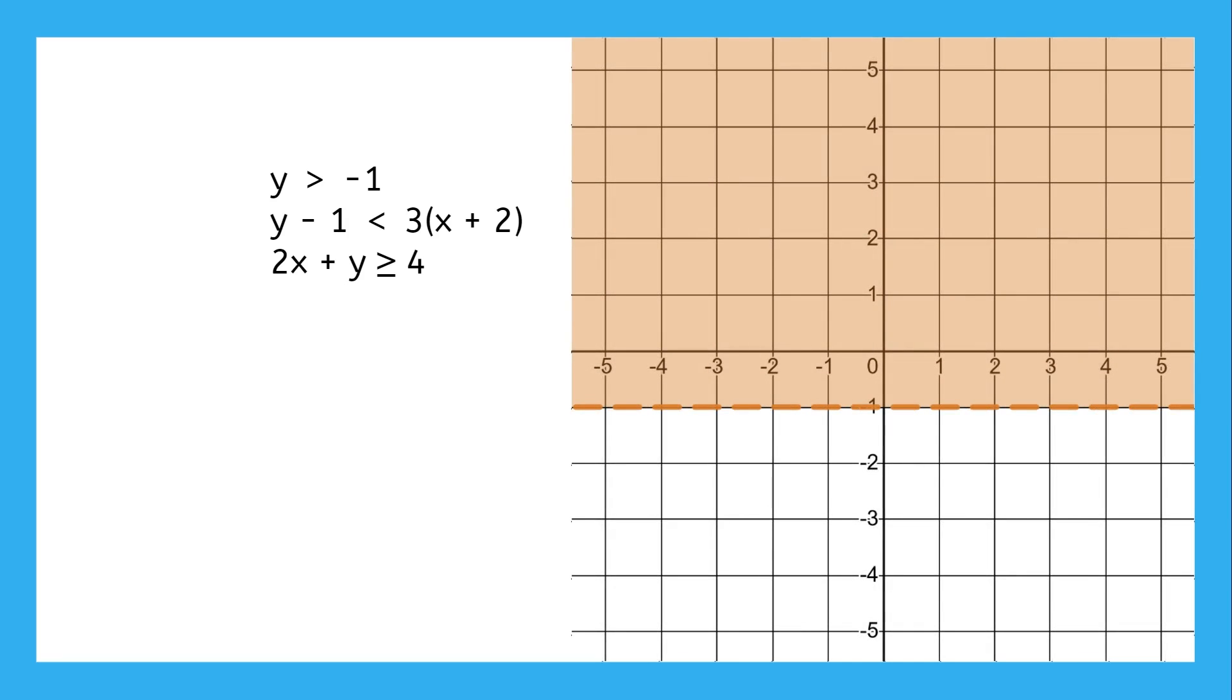The second inequality is in point-slope form, so we plot the given point (-2, 1), use the slope of 3 to find a second point, and draw a dashed line through them.